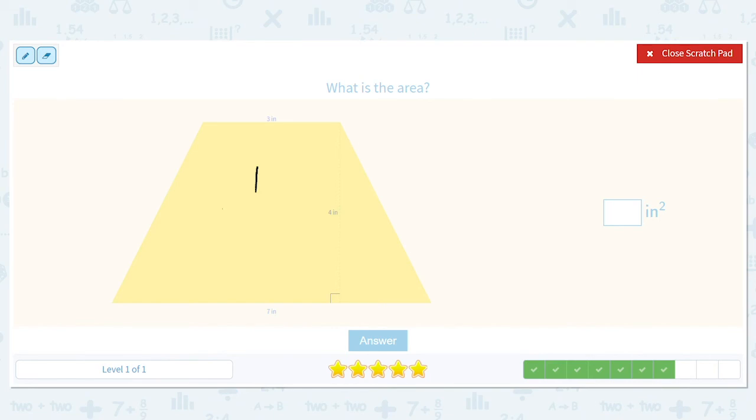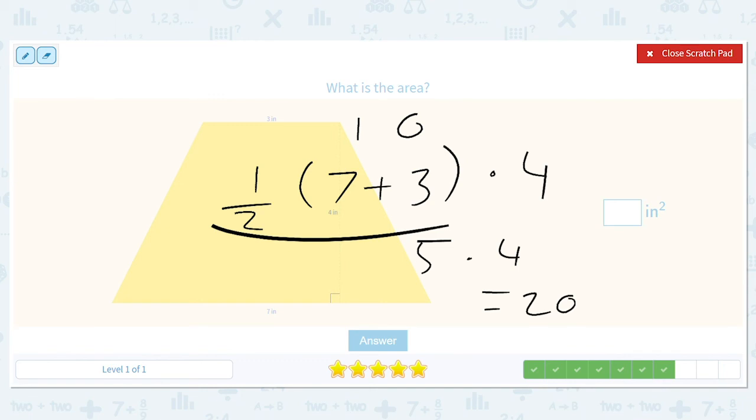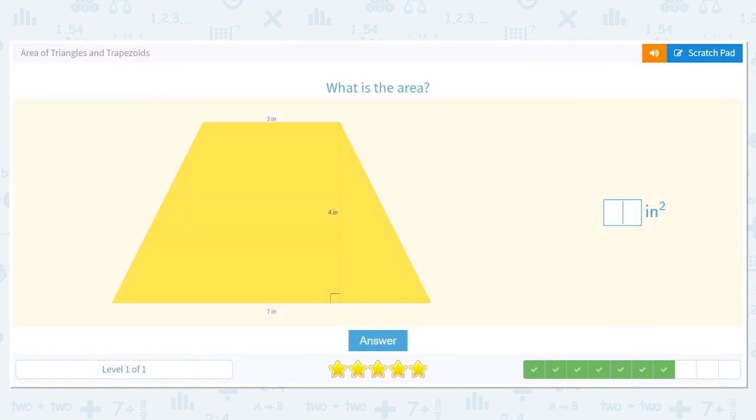One-half times seven plus three times four. This is one-half times 10, which is just five times four, or 20. 20 square inches.